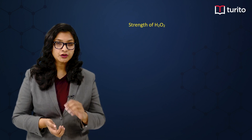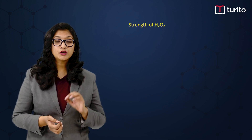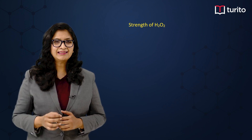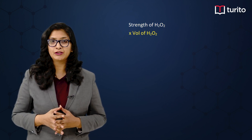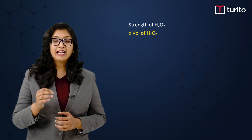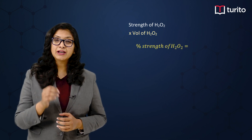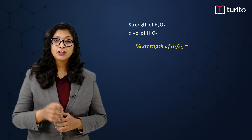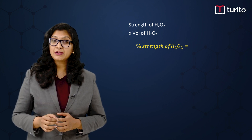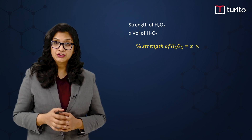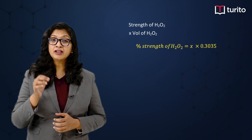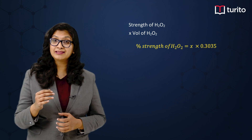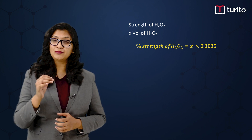Usually in these types of questions, the question is given in volume of H₂O₂. Let us say that I am having X volume of H₂O₂ and I have to find out the percentage strength of H₂O₂. Then what we will do? We will multiply that X volume of H₂O₂ with 0.3035 and I will get the percentage strength of H₂O₂.